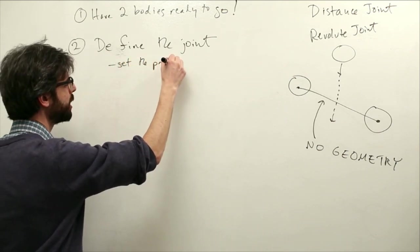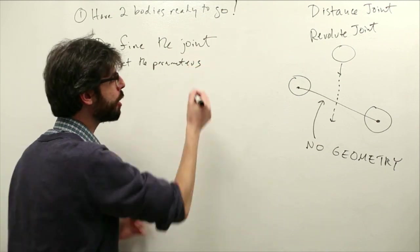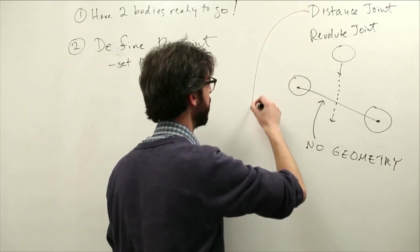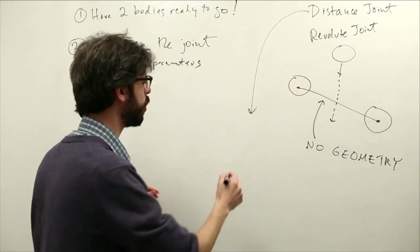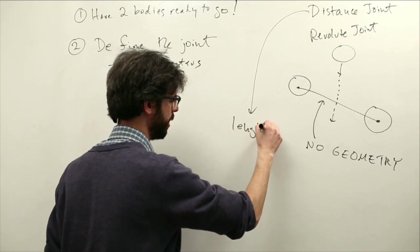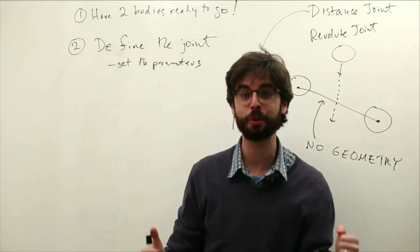So just as an example, what are the parameters for a distance joint? Let's list those. The parameters for a distance joint is a length. This is the rest length. Remember the rest length of a spring. If a spring comes naturally to rest, what will that distance be between the two bodies?